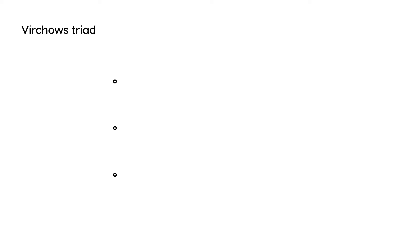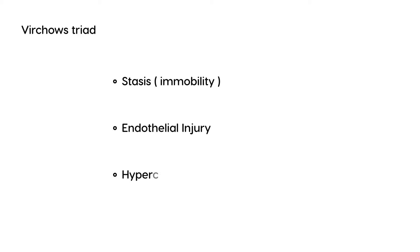There's something called Virchow's triad, and these three things are the risk factors for developing a thrombus. They are: stasis — also known as immobility, so somebody who is bedridden; endothelial damage — some sort of trauma or injury; and the last one is an inherent or intrinsic hypercoagulability state, meaning some disorder that makes it more likely the patient will form a blood clot.